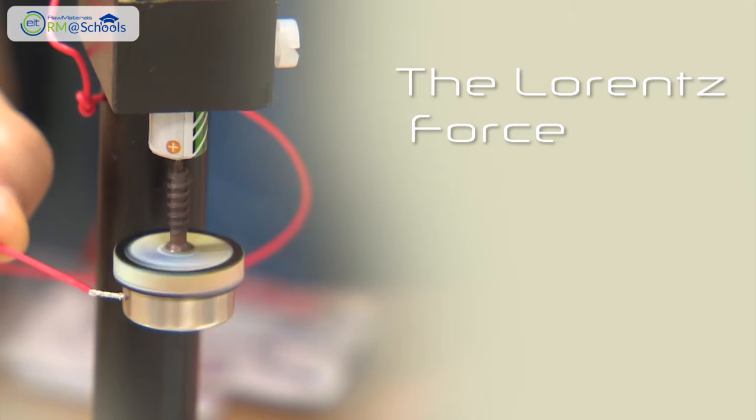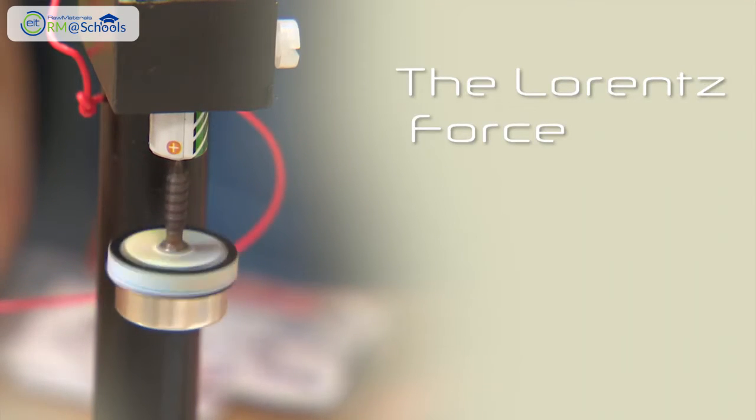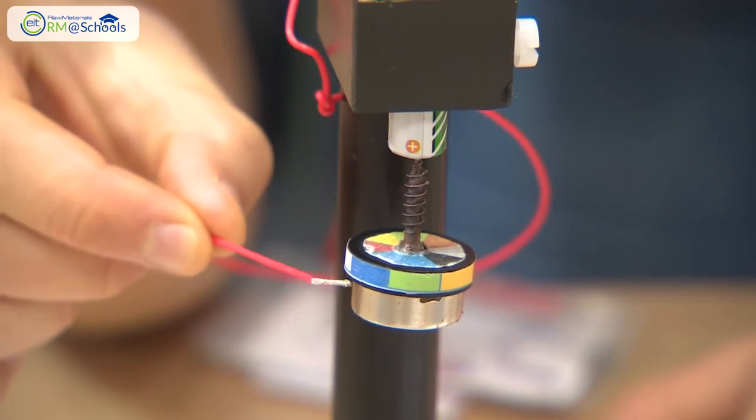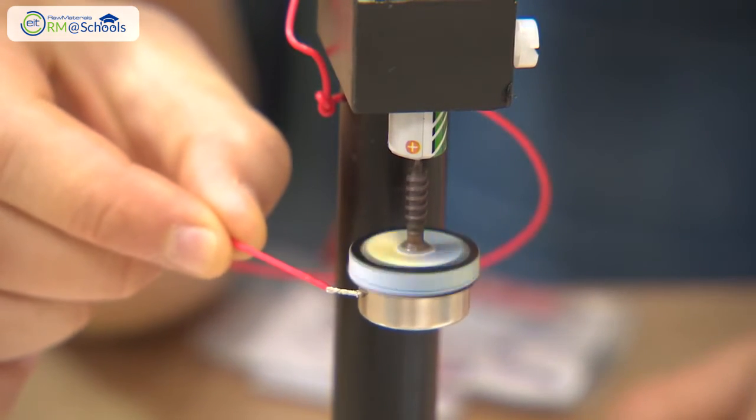As we can see, we have been talking about the homopolar engine. We find a battery connected to a circuit and a screw with a support system and a magnet.